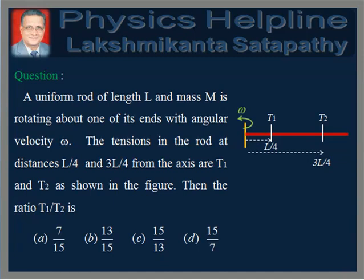Then, the ratio T1 by T2 is? The options are 7 by 15, 13 by 15, 15 by 13, and 15 by 7.